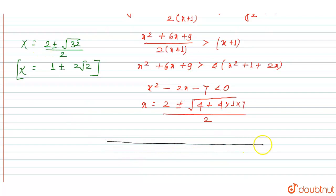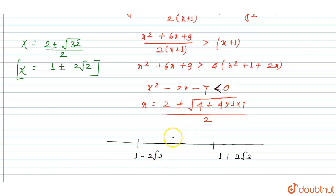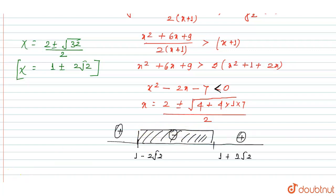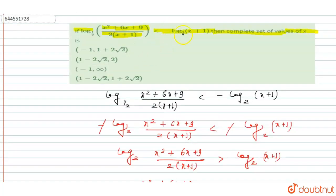Plotting on the number line: 1 + 2√2 is a positive quantity, and 1 − 2√2 is negative. For x² − 2x − 7 ≤ 0, the inequality holds between the roots. The defined region is between 1 − 2√2 and 1 + 2√2.